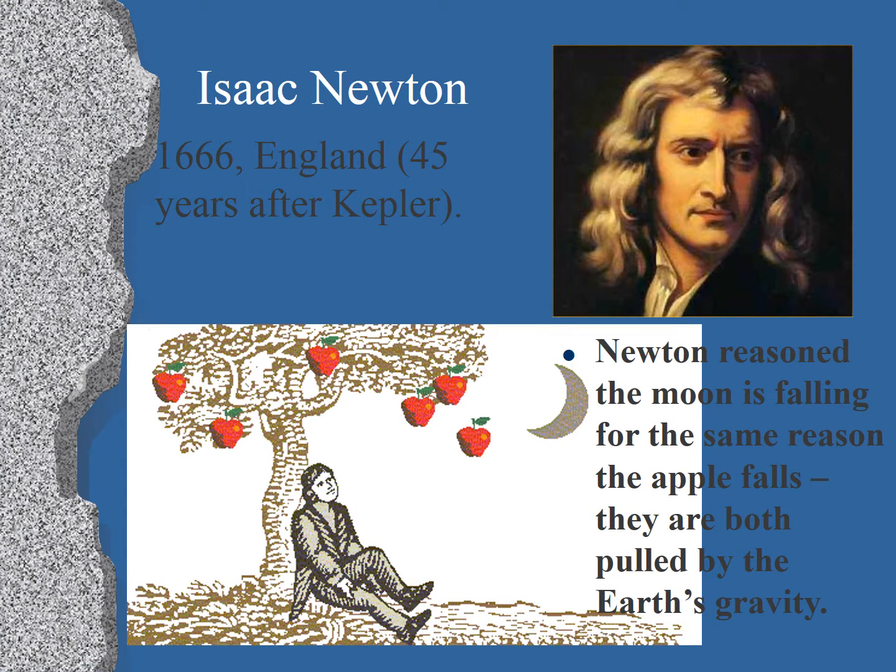Well, along came Isaac Newton in 1666. This is about 45 years after Kepler, and he reasoned that the moon is falling for the same reason that an apple falls. They're both being pulled by the Earth's gravity, and so the gravity must reach all the way up to the moon.